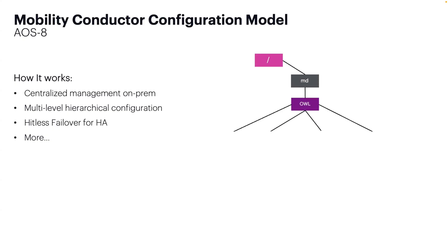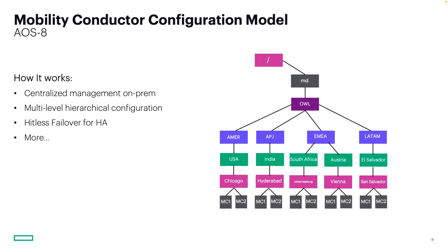When first released, AOS 8 became the new standard for controller-based Wi-Fi deployments: centralized on-prem management, multi-level hierarchical configuration, and one of the big standouts, hitless failover through controller clustering. The familiar hierarchy diagram reflects how we built scalable, repeatable deployments across global enterprises. Each folder level would push down config — global SSIDs, regional NTP servers, site-specific VLANs — all inherited from levels above or applied to a specific controller. This hierarchy gave us control and clarity, especially with features like profile reuse and automated firmware upgrades across multiple sites.